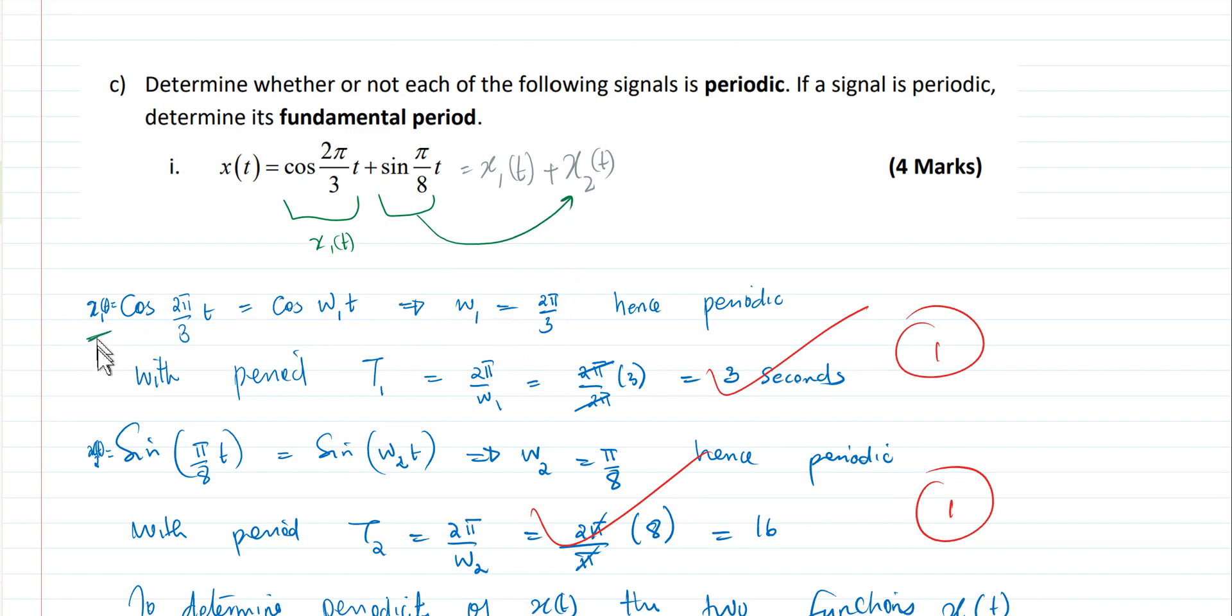So we deal with x1(t) first, and we express it the way we normally express equations in terms of angular frequency. And what we then see is that our angular frequency ω1 equals the coefficient of t, which is 2π/3. That is what we equate at this stage.